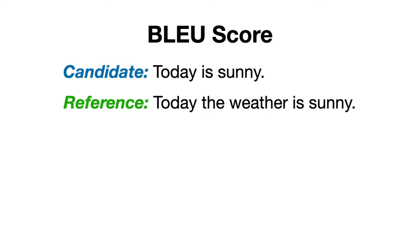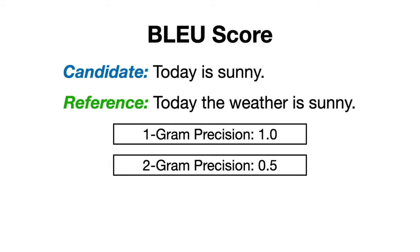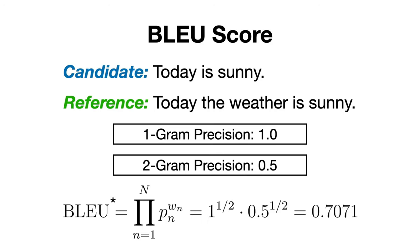For instance, using the previous example, we have obtained a precision of 100% for unigrams and 50% for bigrams. And if we consider only those in the computation of the BLEU score, but remember, we usually compute up to 4-grams and I am doing this only for simplicity, we would get a BLEU score of approximately 0.70 by geometrically averaging the precisions.